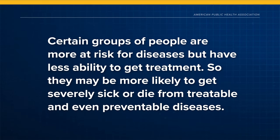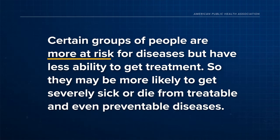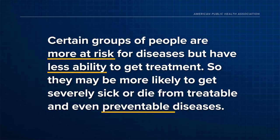We face a similar situation in public health. There are people who can easily access whatever resources and services they need, and others who struggle to get the basics, like healthcare, clean water, safe housing, education, and a livable wage. Which means that certain groups of people are more at risk for disease, but have less ability to get treatment. So they may be more likely to get severely sick or die from treatable and even preventable diseases.